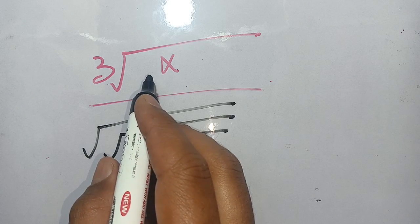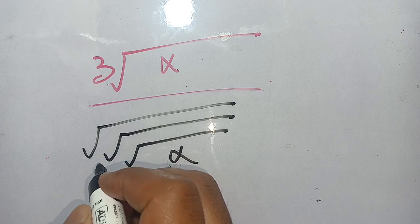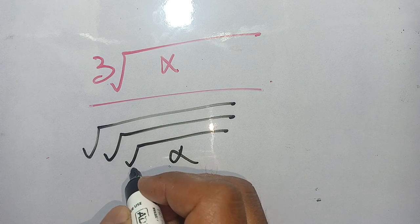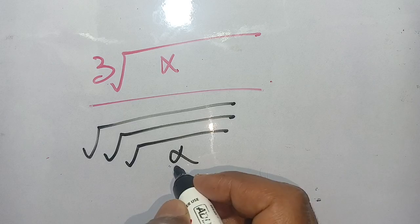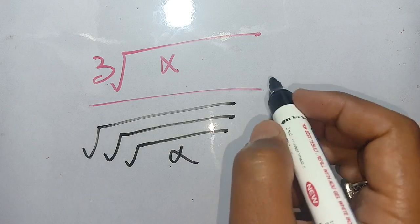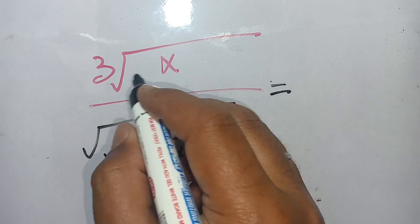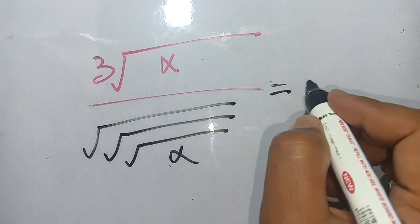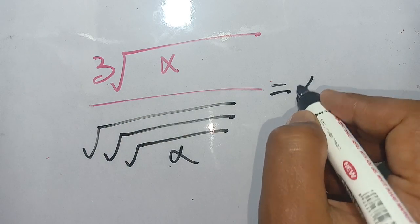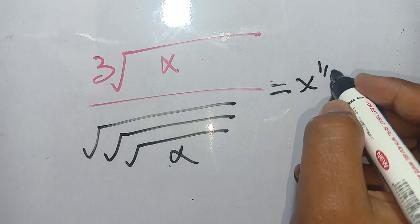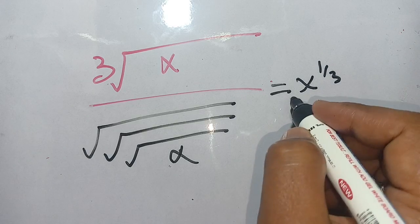How to solve the cube root of x divided by the square root of the square root of the square root of x. We write the cube root of x as x power 1 divided by 3.